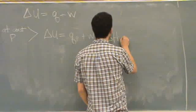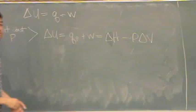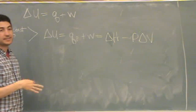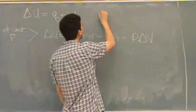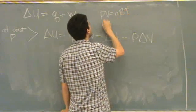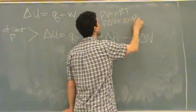Okay, work is minus P delta V. So this is essentially your first law. You'll want to remember that PV equals NRT, or P delta V equals delta NRT.